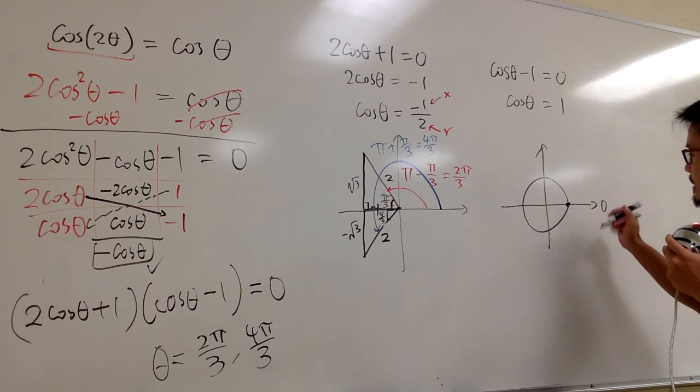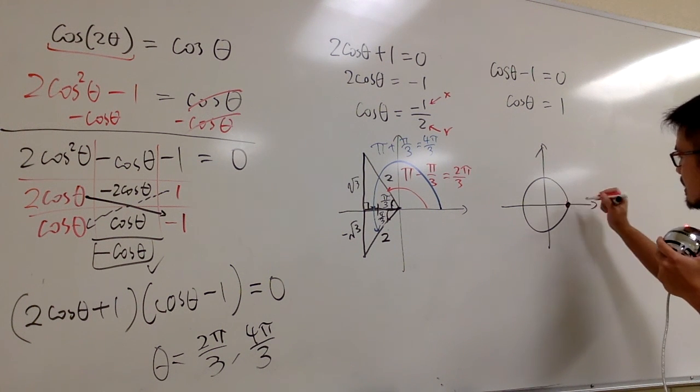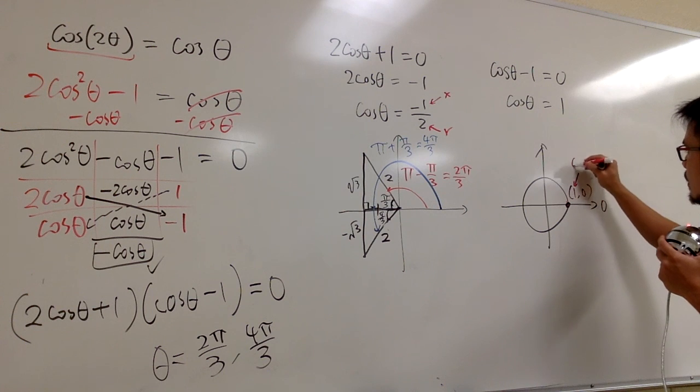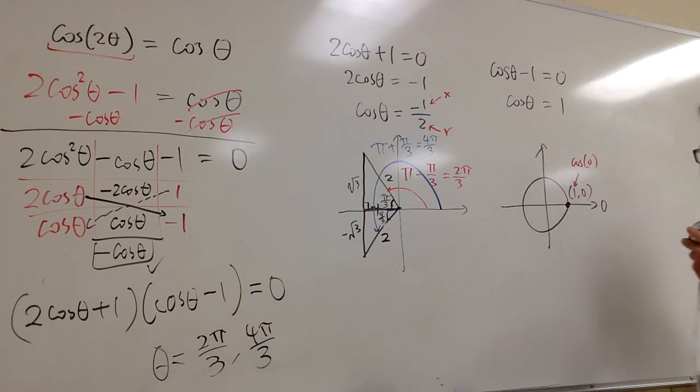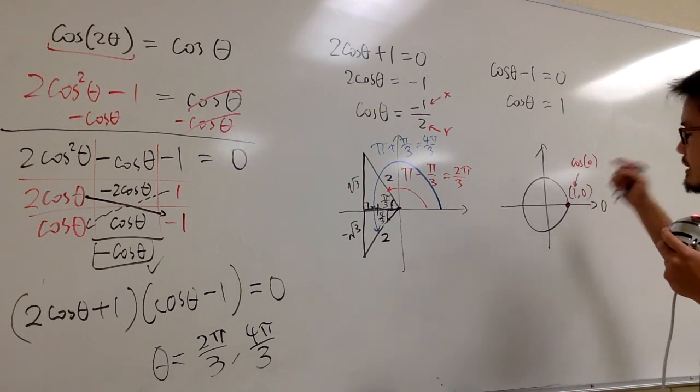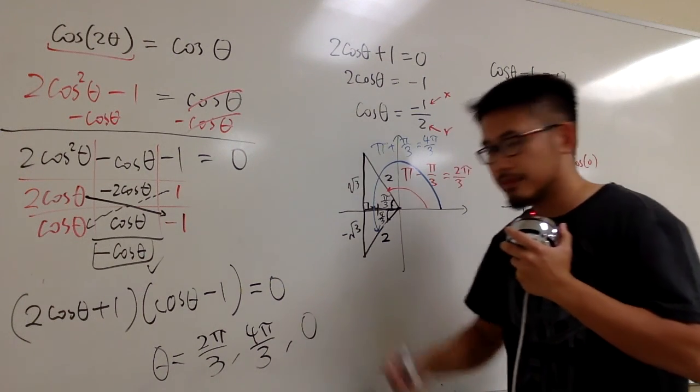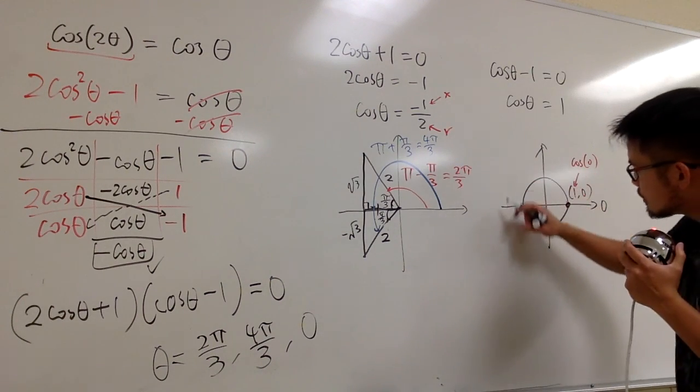This point here, let me just indicate this in red, is 1, 0. So, that means cosine of 0 is equal to 1. So, 0 is the angle right here.